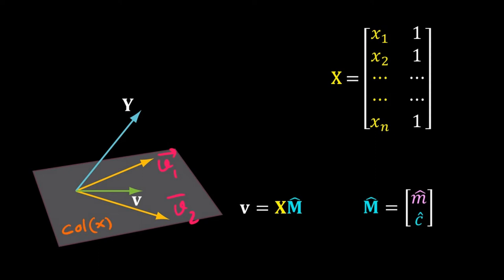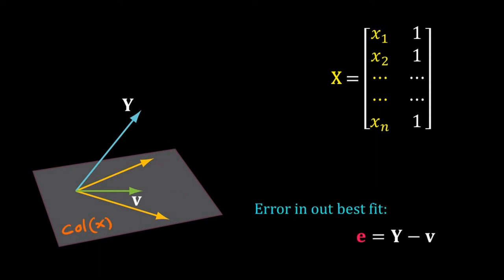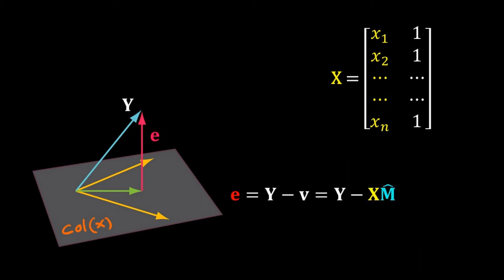Then what is the error in our best fit? That error must be equal to y minus v. I have shown that error vector using this red arrow. Now, replace v by X·m̂. So I get error vector e = y − X·m̂. V is the projection of Y on the column space of X, so e, the error vector, is orthogonal to the column space of X.